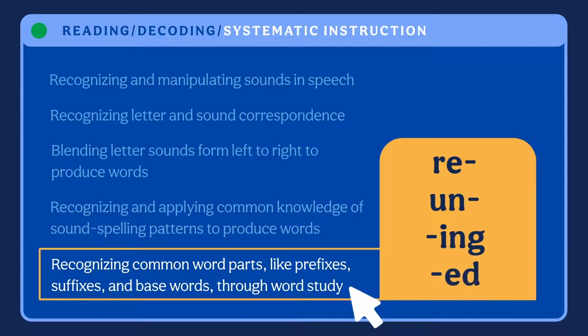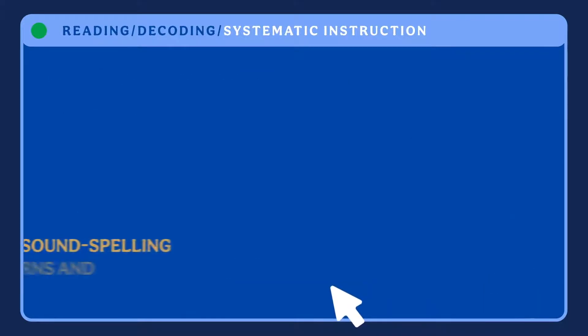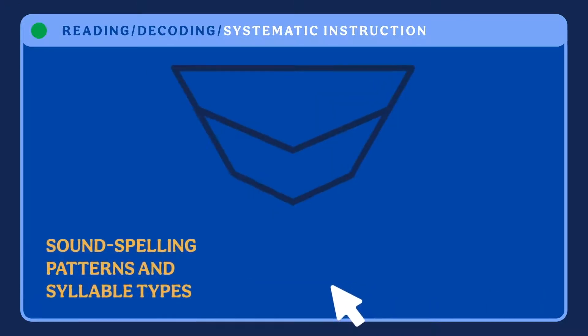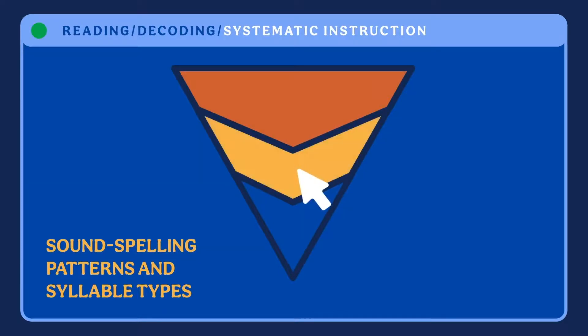Recognizing common word parts like prefixes, suffixes, and base words through word study. Within this broad framework, the scope and sequence should drill down to a specific order for teaching different sound spelling patterns and syllable types.